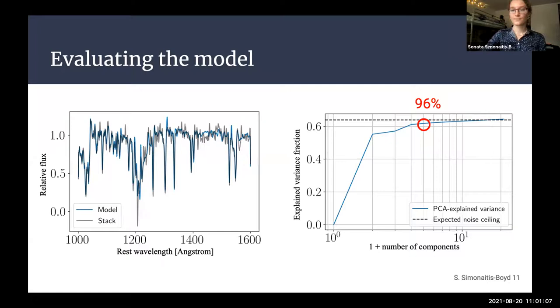So, to wrap it up, we've found that one component is enough to explain the variation in the Lyman-alpha forest. This is actually pretty similar to the method that LATIS uses, and so we validate LATIS's method. We've also found that because only one component is necessary for the forest, the forest is simple to model, and this is very useful for Lyman-alpha tomography, which really wants a simple underlying spectrum. We've also found that four components are enough for the spectrum redward of Lyman-alpha, and outside of Lyman-alpha tomography, having an accurate model is useful for measuring galaxy redshifts and detecting metal absorption. Thank you.